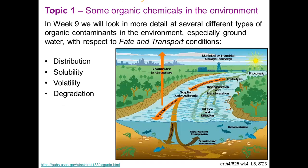The first topic is fate and transport of organic molecules - a huge topic. Some important considerations are: what is the distribution of organic molecules into the environment? Are they soluble in water or not? Are they volatile or not? Do they degrade, and if so, how? I've shown a diagram from a USGS publication about the Mississippi River showing a whole range of processes, some involving distribution and some involving degradation.